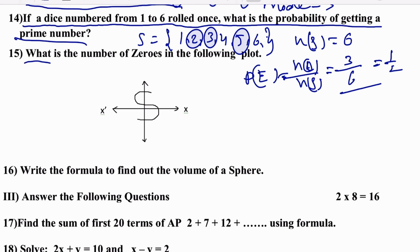What is the number of zeros in the following graph? Looking at the graph, there is only one zero, so the answer is 1.